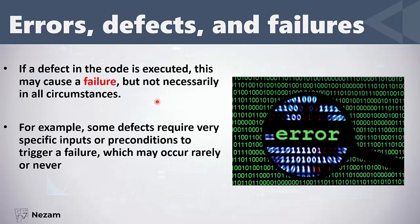If the code is executed with a defect, this may cause a failure — but not always. Sometimes defects cause failures and sometimes they don't. For example, some defects require very specific inputs to cause failures. If a defect only triggers when someone purchases 10,000 items at the same time, that failure may rarely or never happen in the real world. On the other hand, some defects cause failures that are easy to identify.